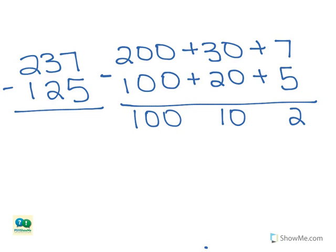Then we add the hundreds, tens, and ones place back together to find the total. 100 plus 10 plus 2 equals 112.